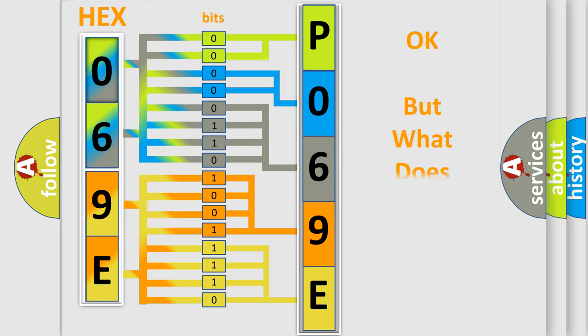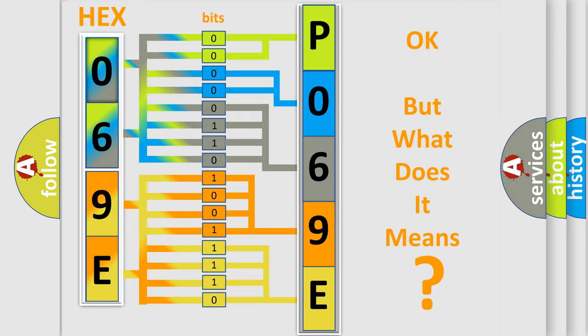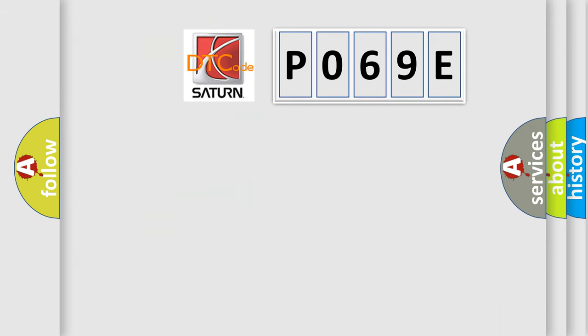We now know in what way the diagnostic tool translates the received information into a more comprehensible format. The number itself does not make sense to us if we cannot assign information about what it actually expresses. So, what does the Diagnostic Trouble Code P069E interpret specifically for Saturn car manufacturers?